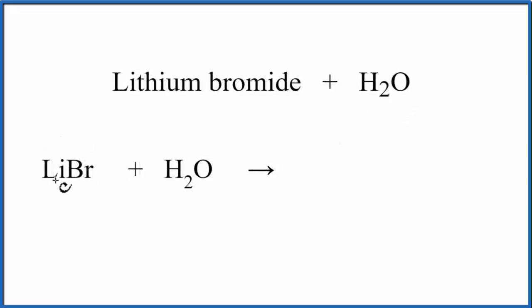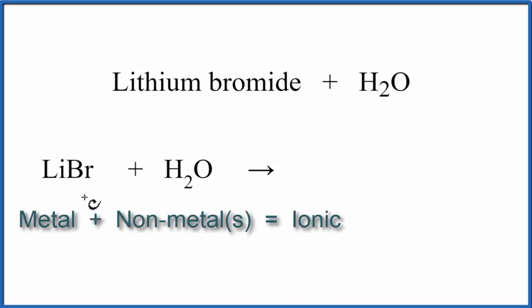Lithium bromide is made up of a metal, that's lithium, and a non-metal, bromine. And because of that, it's considered an ionic compound. That means it's made up of ions.